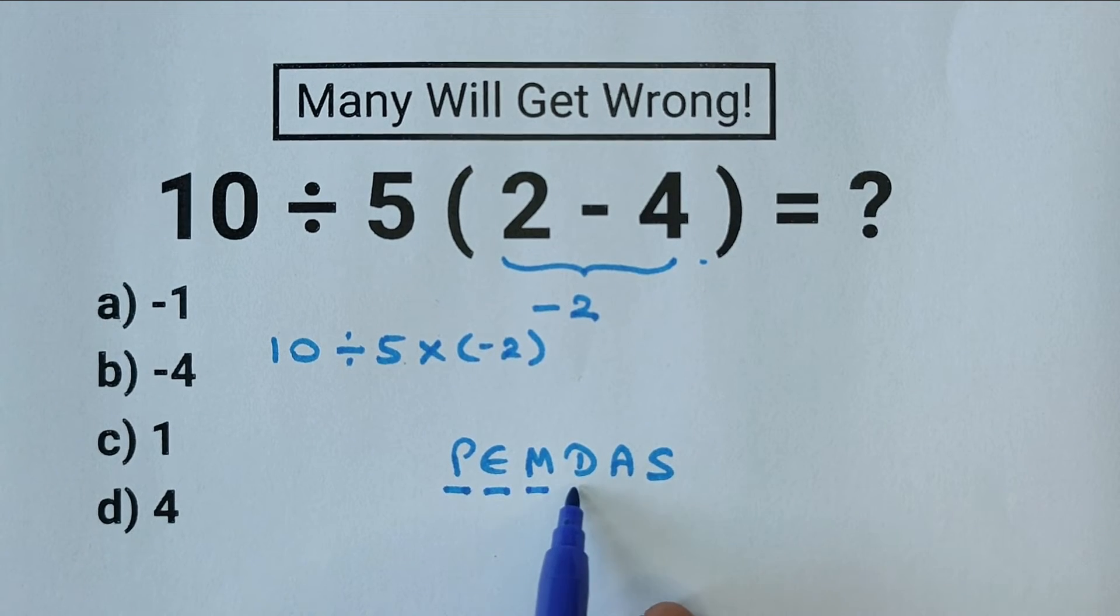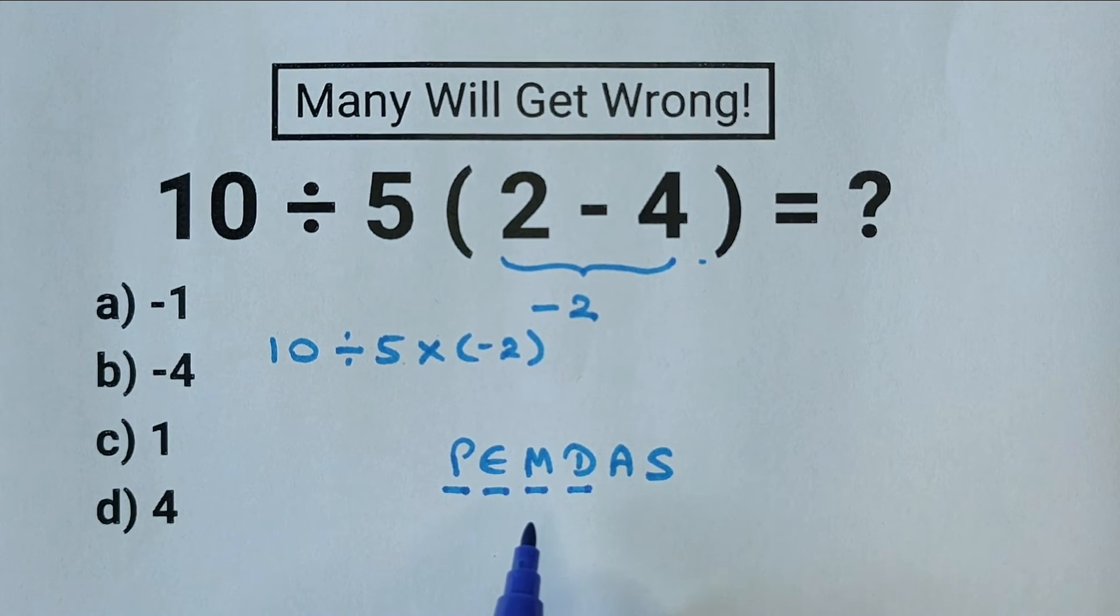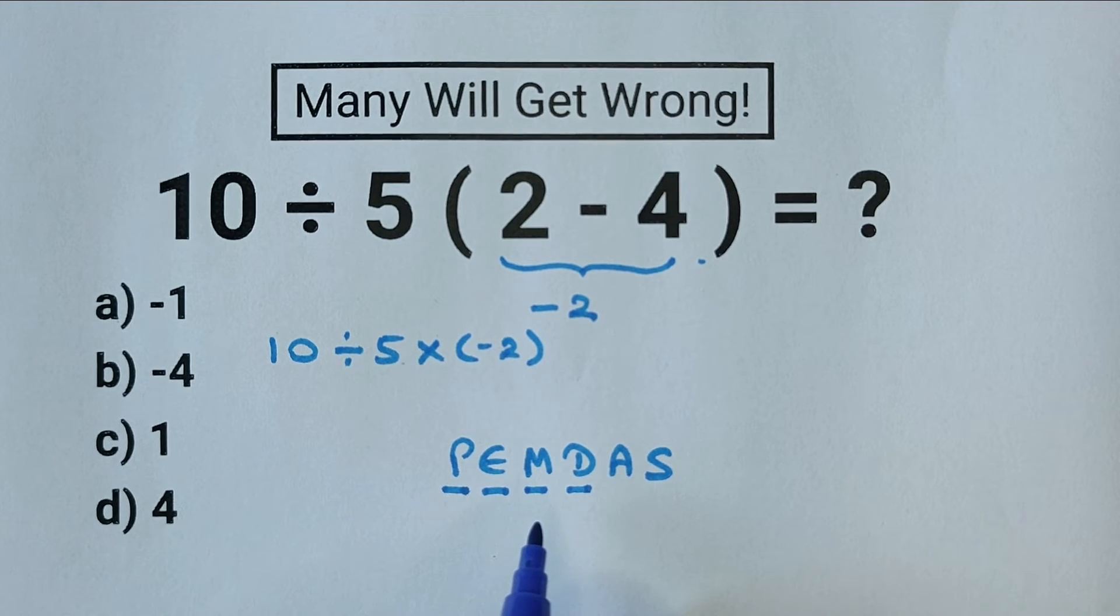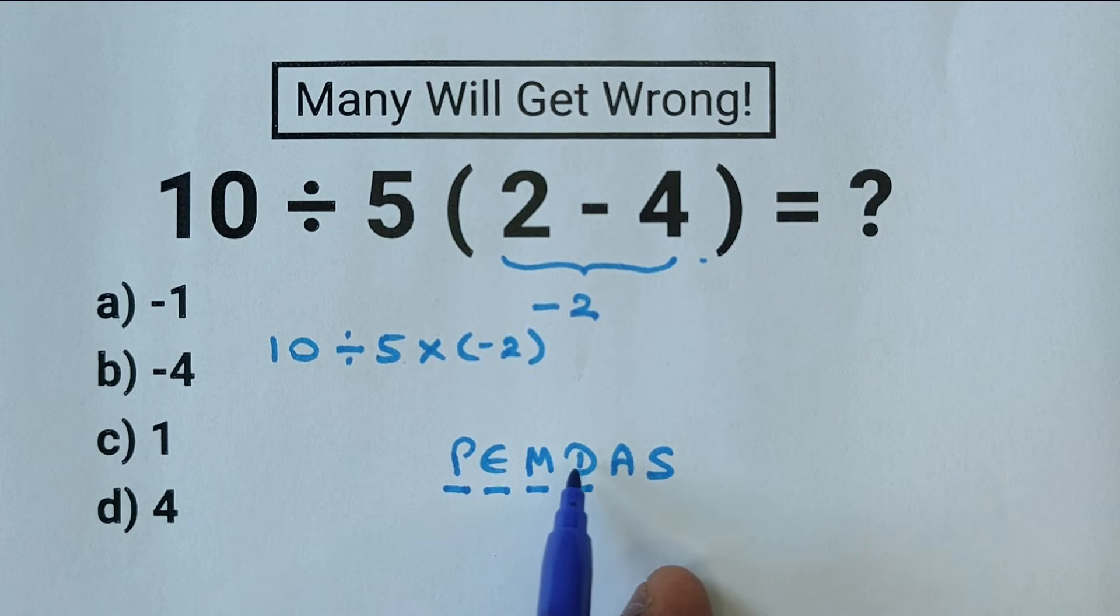And we have M and D, multiplication and division. This is the place where many people get this wrong. Just because M comes before D in the PEMDAS rule doesn't mean that you should always perform multiplication before division.